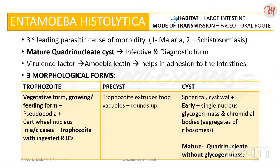The trophozoite is the vegetative form — the growing or feeding form. This one measures around 18 to 40 micrometers, with an average of 20 to 30 micrometers in diameter.